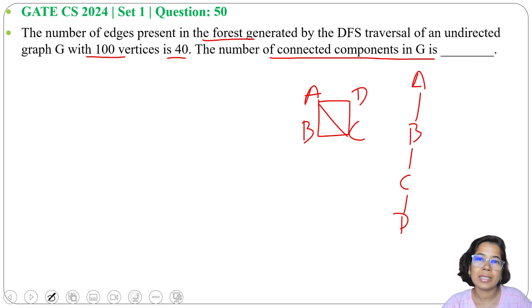So DFS tree, it's like a tree structure. If there are n vertices, then there will be n minus 1 edges. So number of edges will be n minus 1 if it is a DFS tree, it is a single DFS tree.